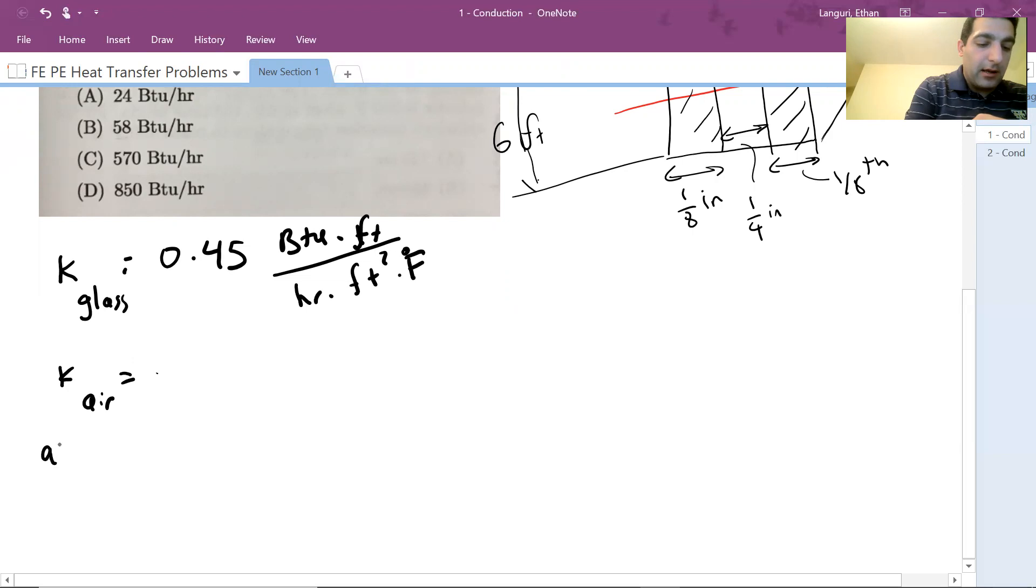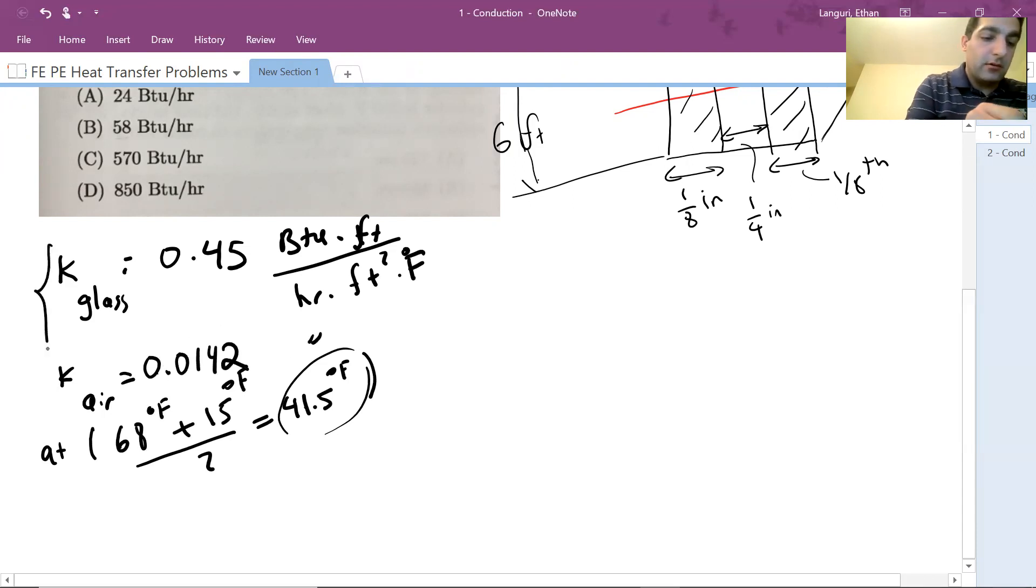Same thing with the air. You should be able to find it at average temperature. So K air at (68 + 15) / 2, which gives you 41.5°F. Let's find the thermal conductivity of air at this average temperature. In this case, K of air would be much lower, which is 0.0142, same unit. So you should be able to quickly find the thermal conductivity values for the material you want through the tables you have.